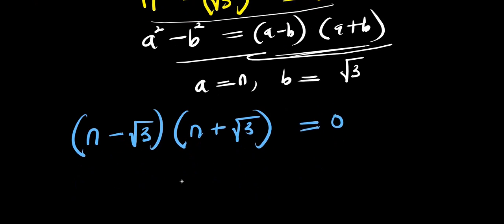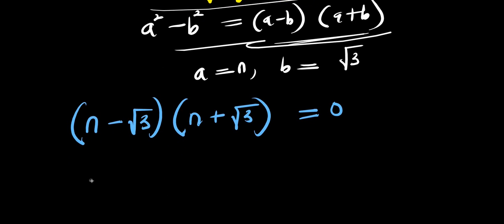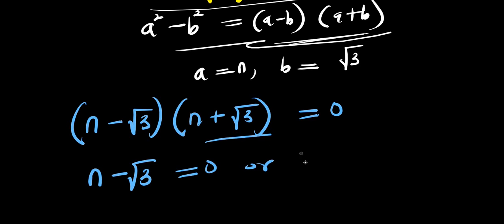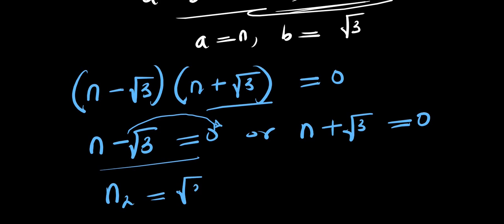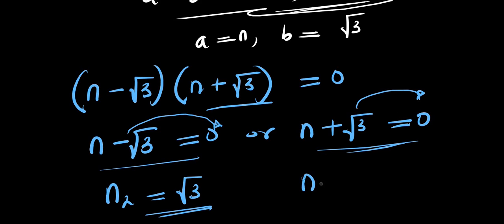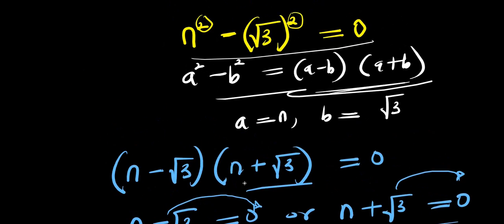We equate each bracket to zero. For a minus b we have n minus root 3, and for a plus b we have n plus root 3, each equals zero. Moving negative root 3 across gives n₂ equals positive root 3. Moving positive root 3 across gives n₃ equals negative root 3. So we have three solutions: negative root 3, positive root 3, and zero.